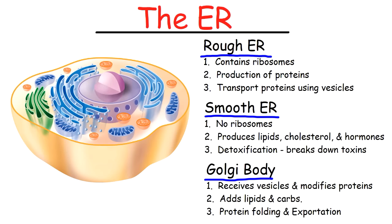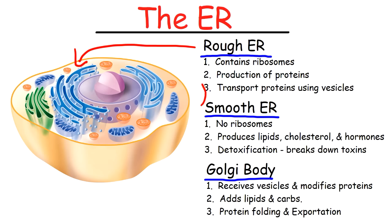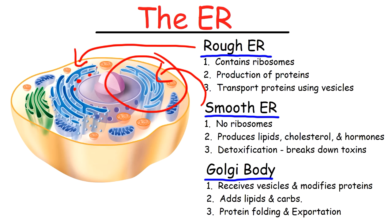Now let's talk about the ER, the endoplasmic reticulum. There are two types. The first one is the rough ER, and the second is the smooth ER. The rough ER contains ribosomes, whereas the smooth ER does not contain any ribosomes.